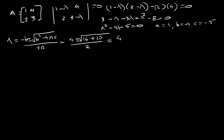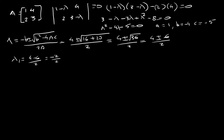So we get 4 plus or minus the square root of 36 divided by 2. Further, this is 4 plus or minus 6 divided by 2. For lambda 1, I start with the negative: 4 minus 6 divided by 2 is minus 2 divided by 2, that's minus 1. And for lambda 2, we do the plus sign: 4 plus 6 divided by 2 equals 10 divided by 2, that's 5. So the eigenvalues are lambda 1 equals minus 1, and lambda 2 equals 5.